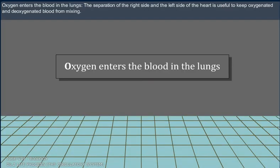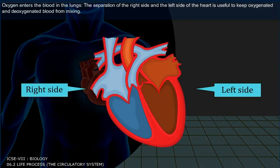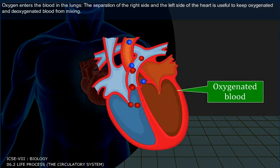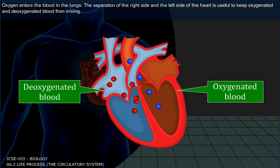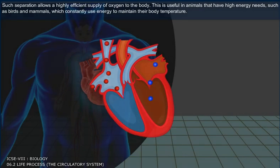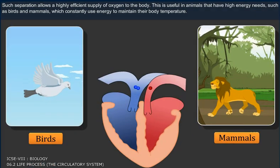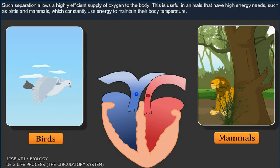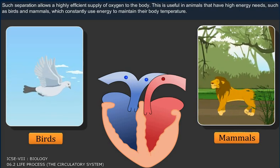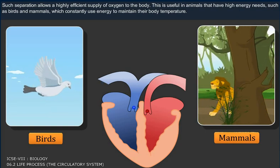Oxygen enters the blood in the lungs. The separation of the right side and the left side of the heart is useful to keep oxygenated and deoxygenated blood from mixing. Such separation allows a highly efficient supply of oxygen to the body. This is useful in animals that have high energy needs, such as birds and mammals, which constantly use energy to maintain their body temperature.